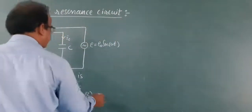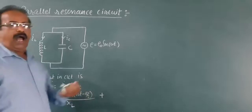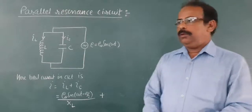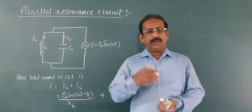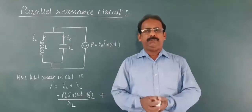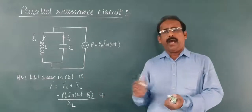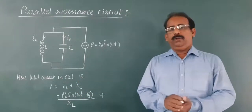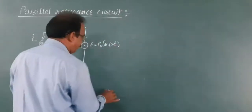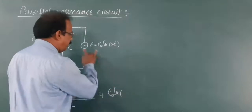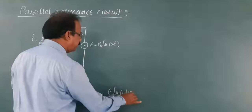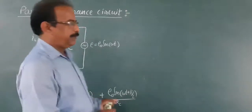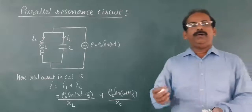Similarly, for the capacitor, IC is the current passing through the capacitor. In a capacitor, the current is always ahead of the EMF by π/2 radian, so while writing the current in the capacitor, the phase is written as (ωt + π/2). Dividing EMF by the reactance offered by the capacitor gives the current: IC = E₀/XC times sin(ωt + π/2).